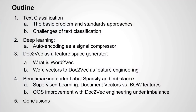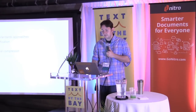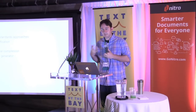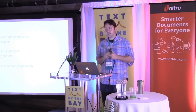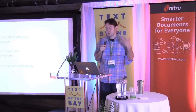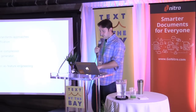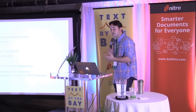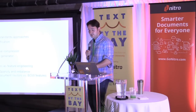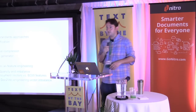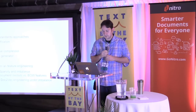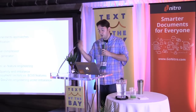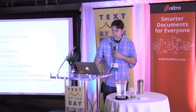I'm going to go through today a quick outline. We're going to go through the basics of text classification — what are the challenges, what are the basic problems — some deep learning applications for text classification, how to deal with the data challenges, using Doc2Vec in particular as a compression algorithm, benchmarking for different label sparsity and imbalance problems against bag of words, and then talking about how these experimental results impact out-of-sample performance with Doc2Vec engineering. And then we will go through the conclusions.